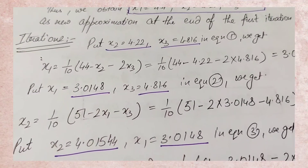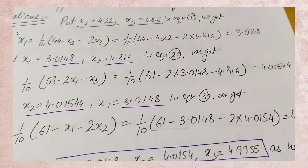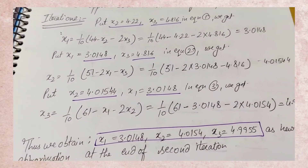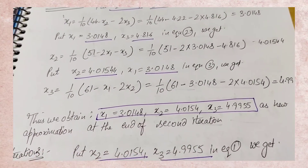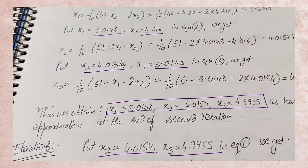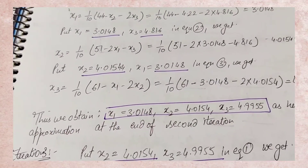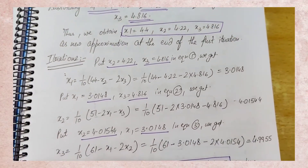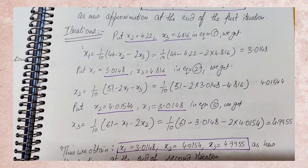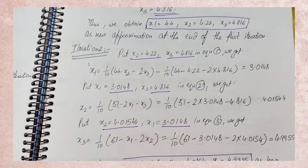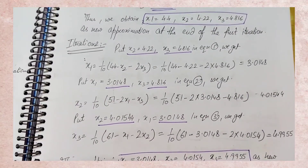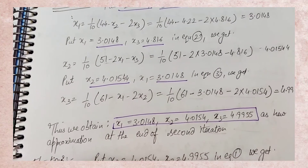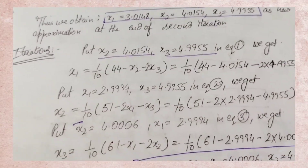Since x3 hasn't been recalculated yet, carry the old x3 value and put it into x2's equation to get a new x2 value. Now x1 and x2 are both updated; put both into x3's equation to get a new x3. At the end of iteration 2, new values are obtained. Now compare: iteration 1 gave x1 = 4.4, x2 = 4.22, x3 = 4.816, and iteration 2 gives x1 = 2.0148, x2 = 4.0154, x3 = 4.9935. The first decimal digits partially match, but 4 significant digits don't match yet, so we continue to iteration 3.